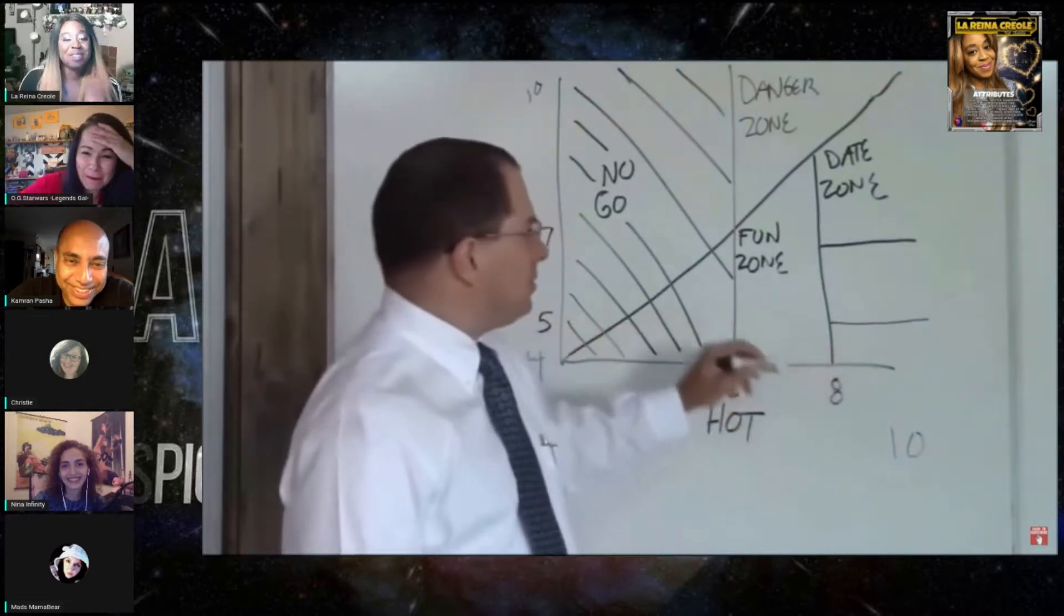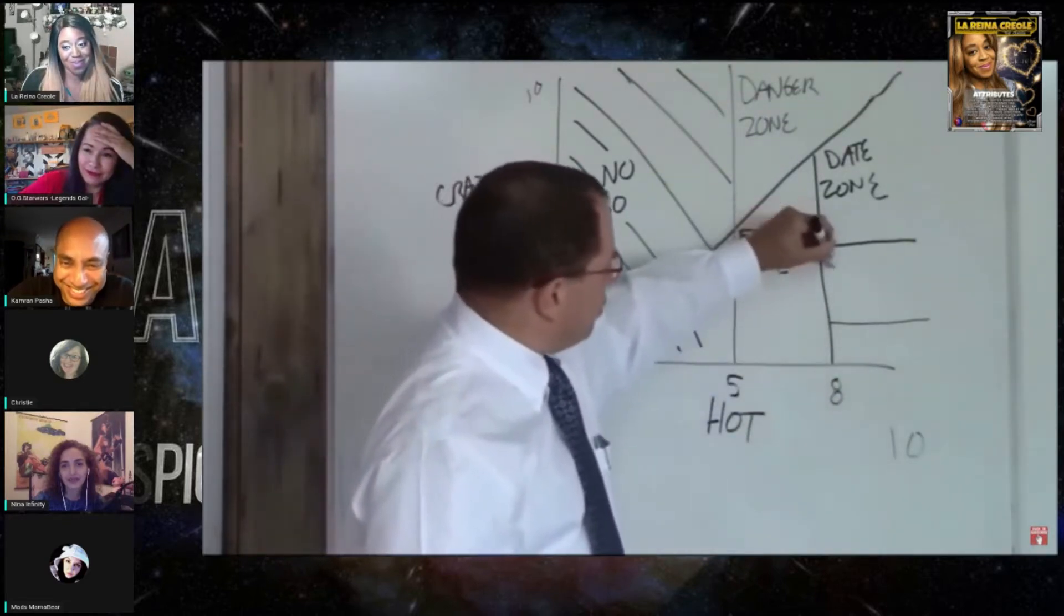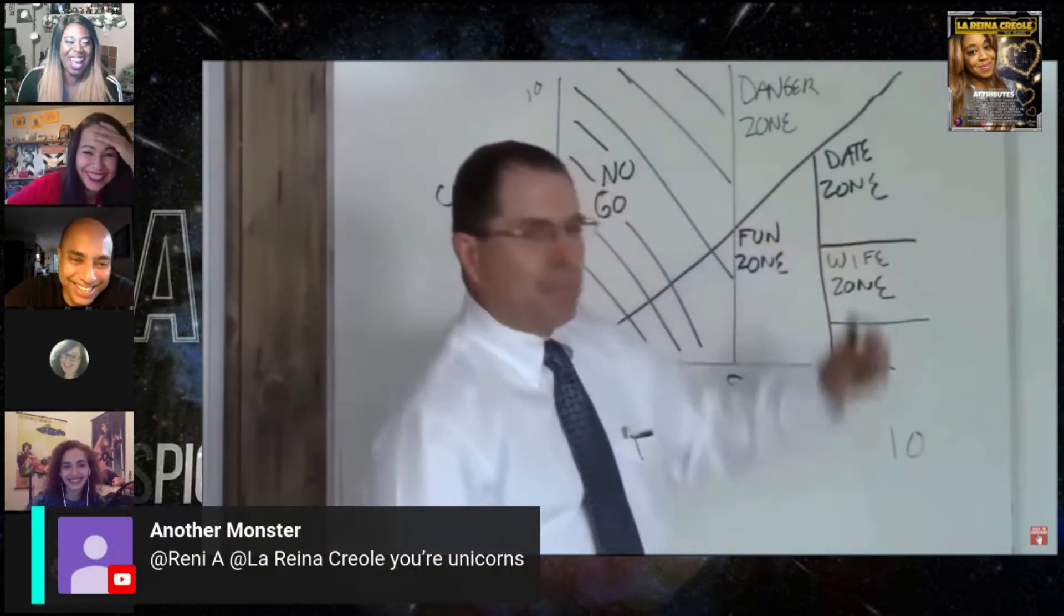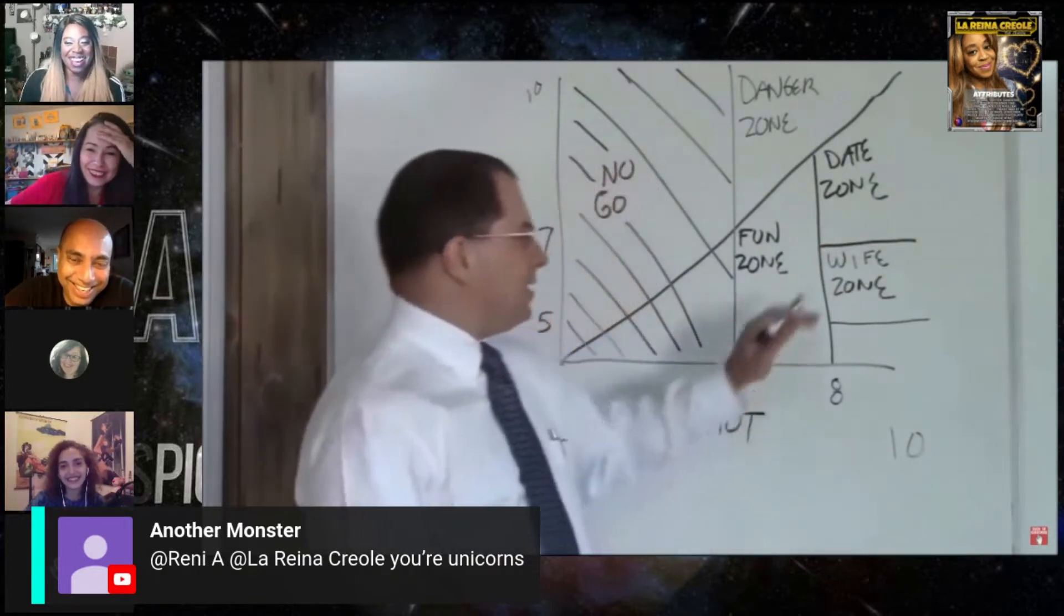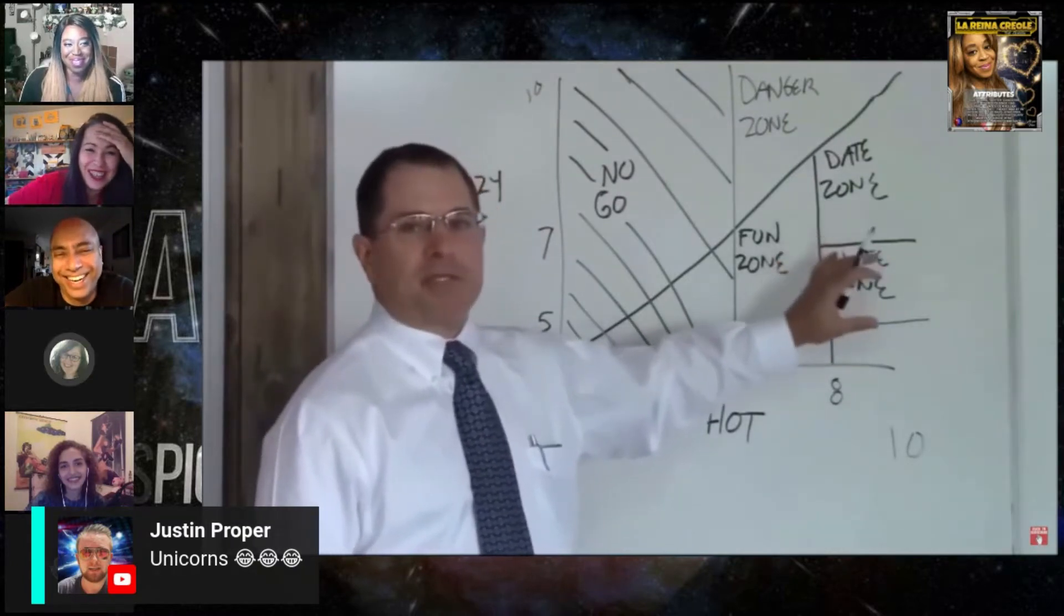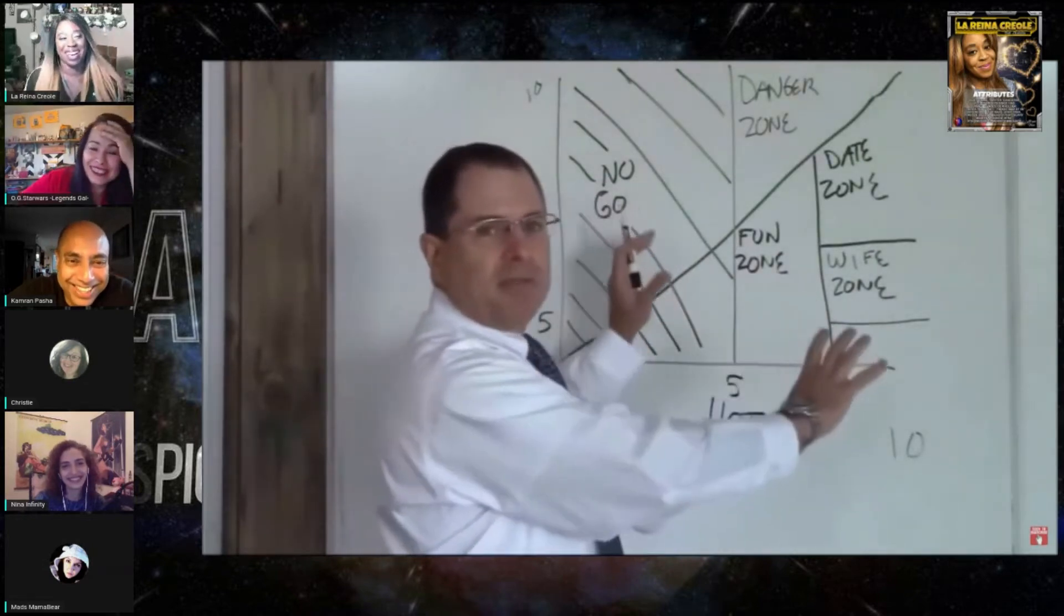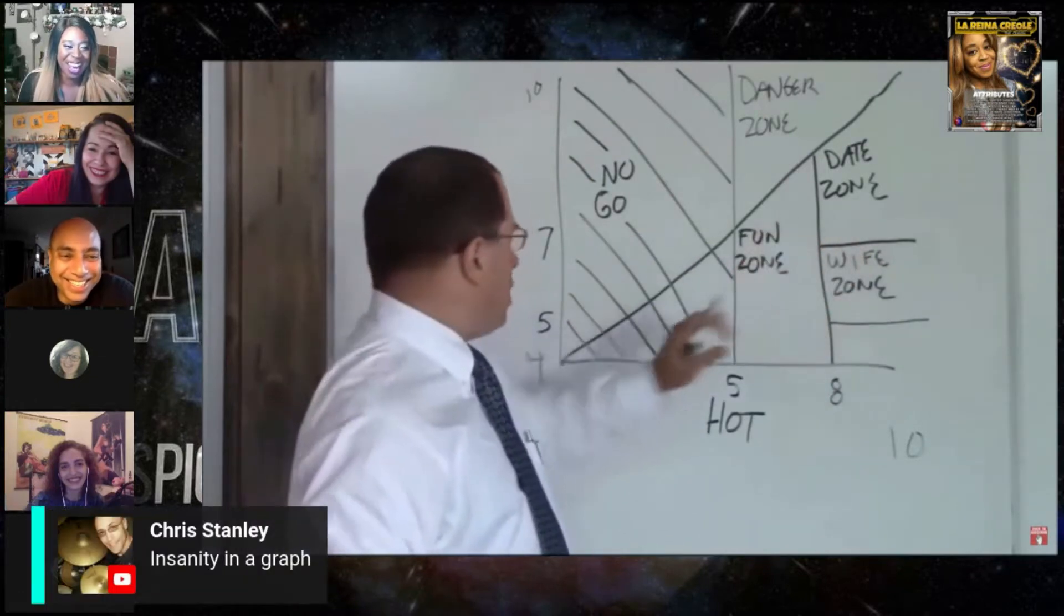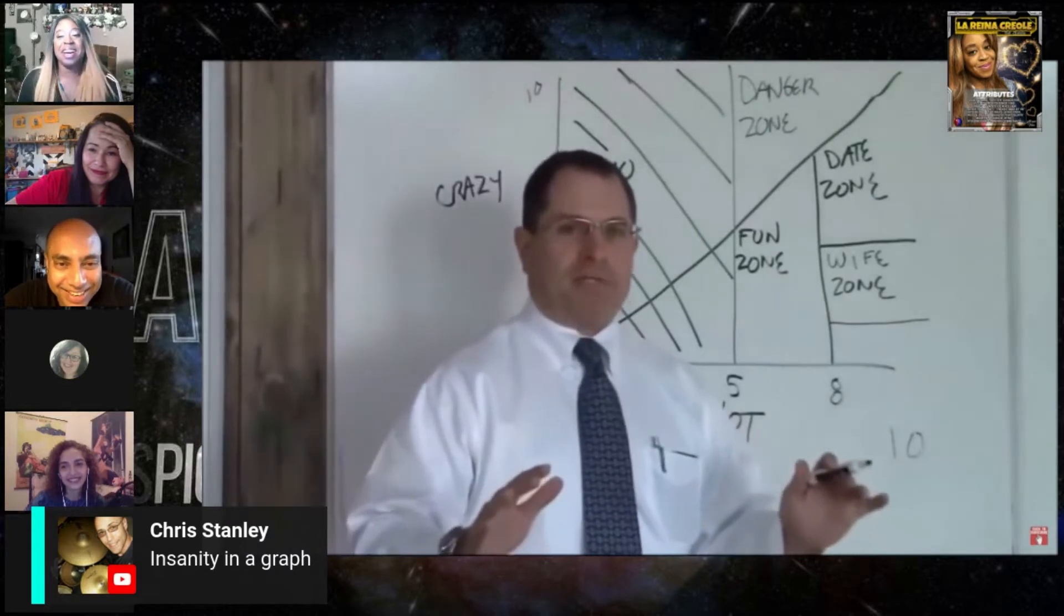What's hot and between about a seven and a five crazy, this is your wife zone. You should consider a long-term relationship. This zone is not scaled to size. This is not a pie chart. What you're after, you want to be five to seven crazy, above an eight hot. That's your wife zone.